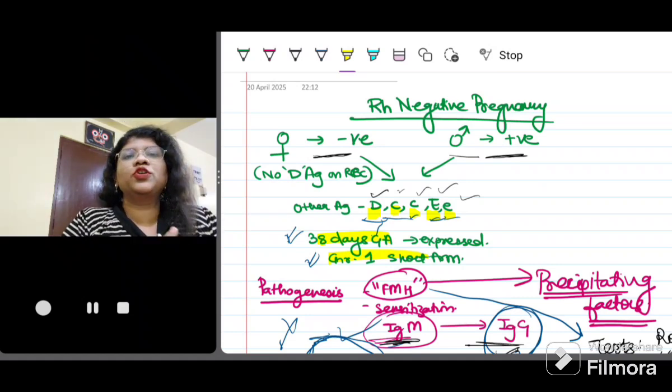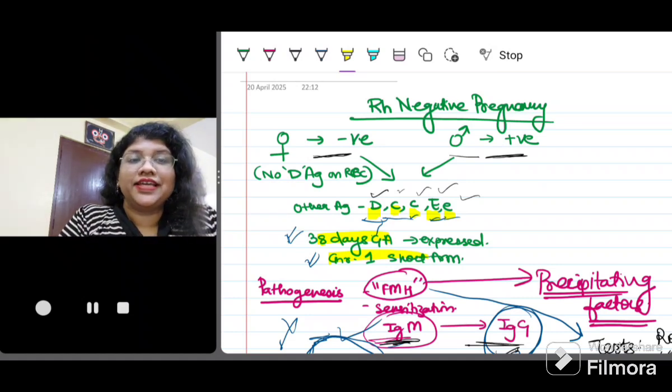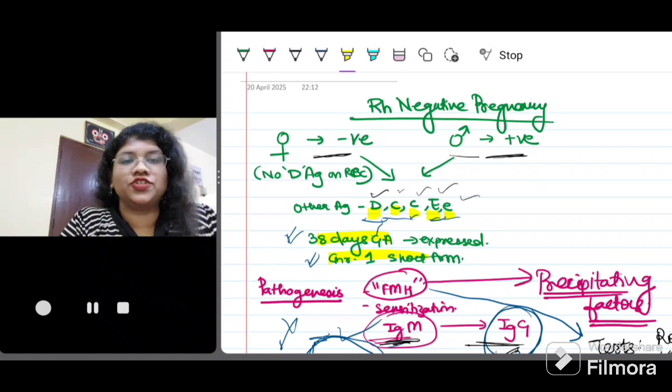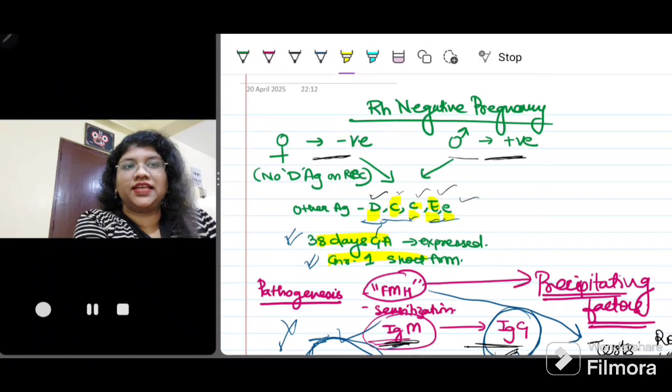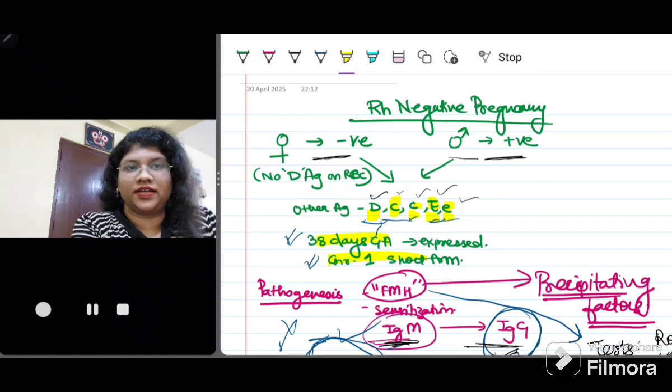First of all, what do you mean by RH negative? It means there is no D antigen present on the RBC. Remember there are other antigens also like capital E, small e. This is expressed on the short arm of chromosome 1 and is roughly expressed at 38 days of gestation.